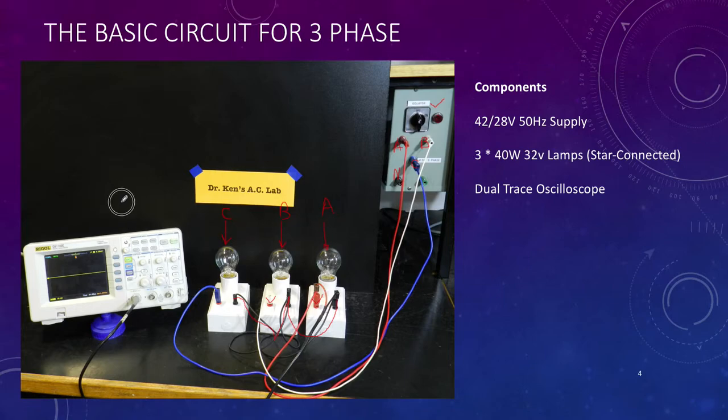Over here we have an oscilloscope. You'll notice at the moment I only have channel one connected, and channel one will stay permanently connected to the A phase. There's our common onto our star point. We'll be looking for the wave shape and how they are in relationship to each other.